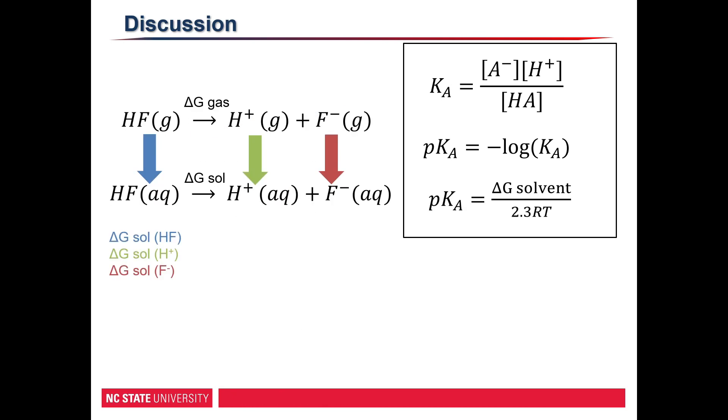Typically when we consider computational pKa calculations, we refer to a thermodynamic cycle like this one, where we would first calculate the delta G in the gas phase, and then calculate the delta G in the aqueous phase, and use these values in combination with the equations in the next slide to calculate our pKa.